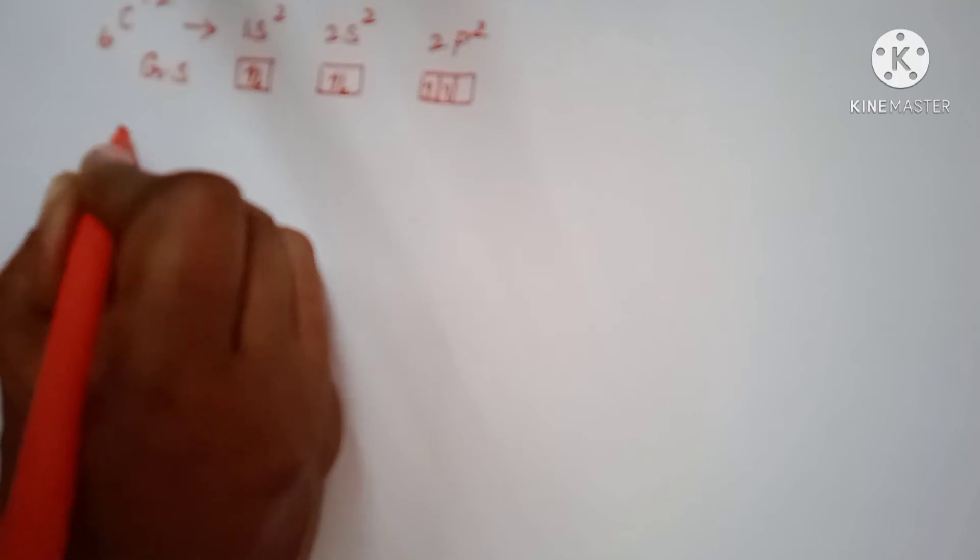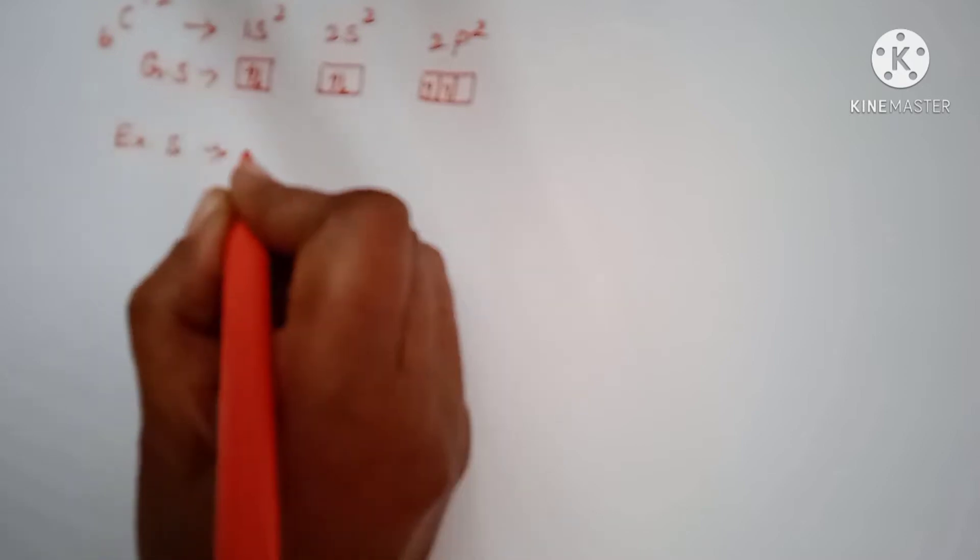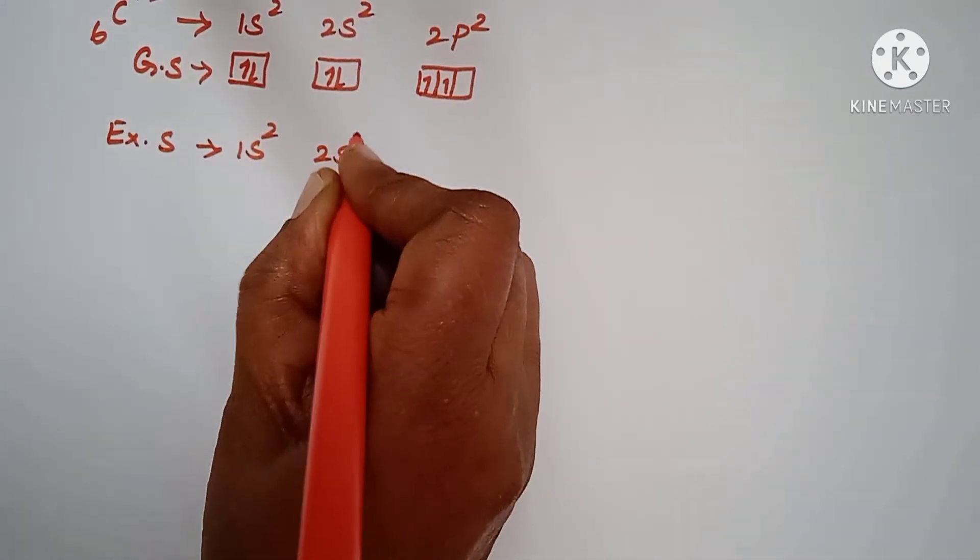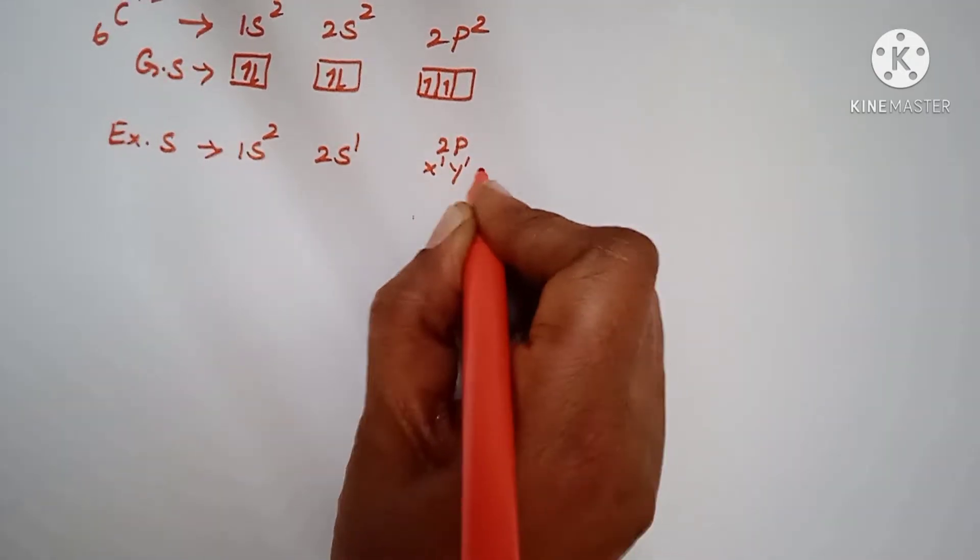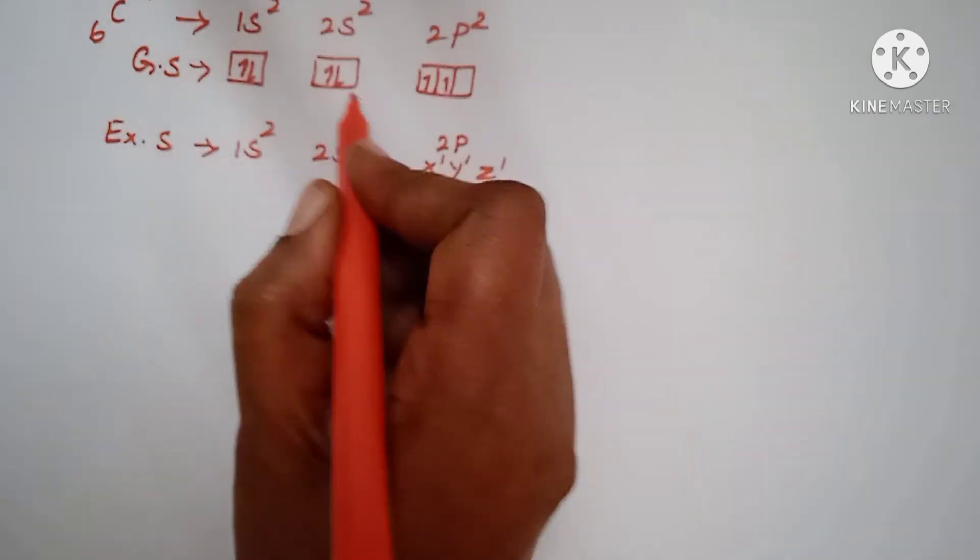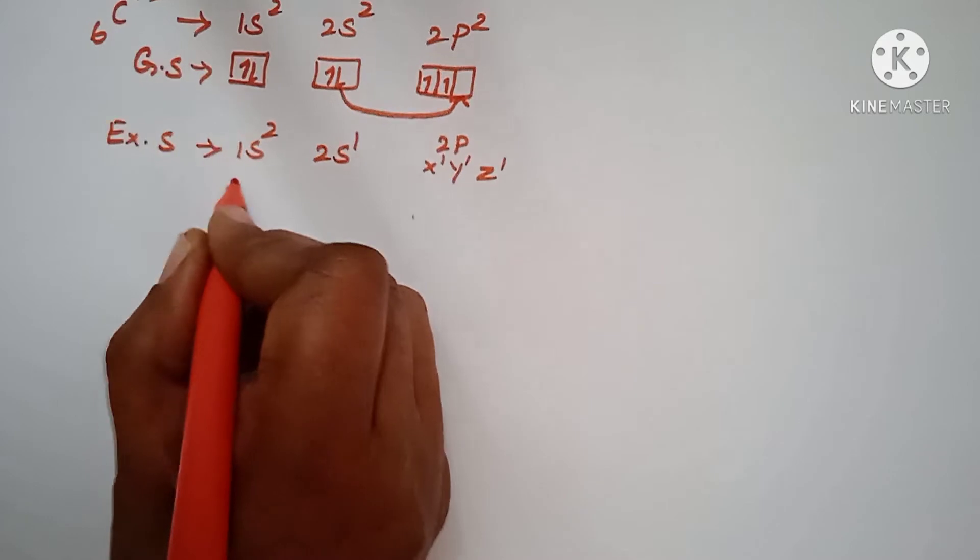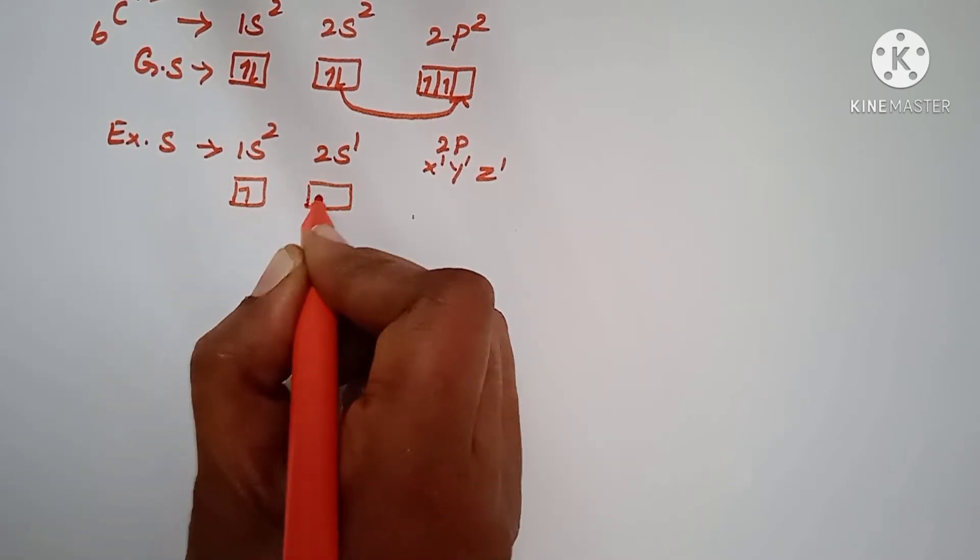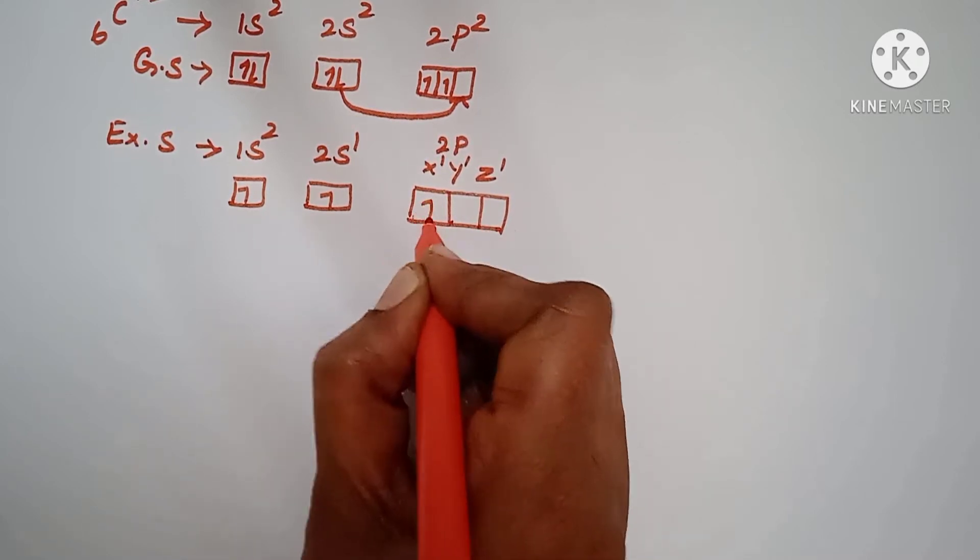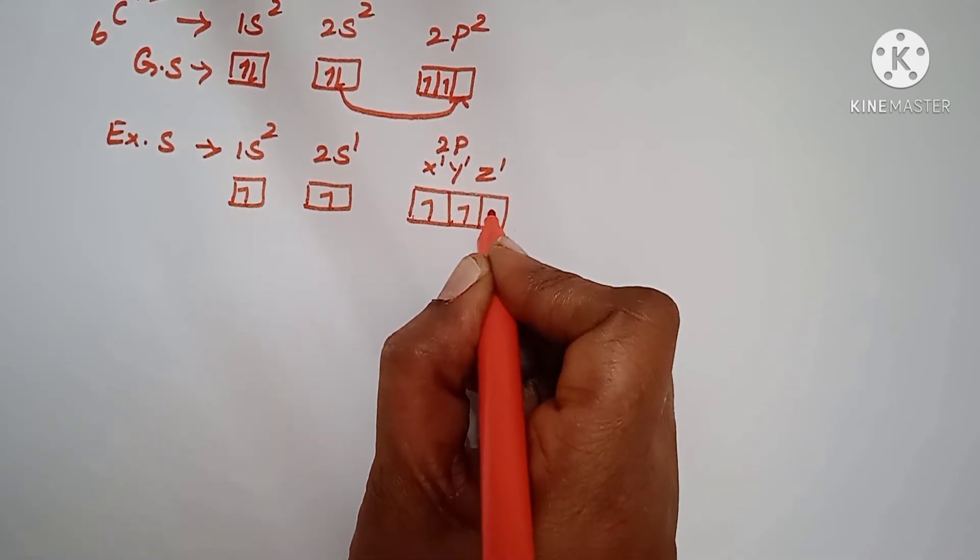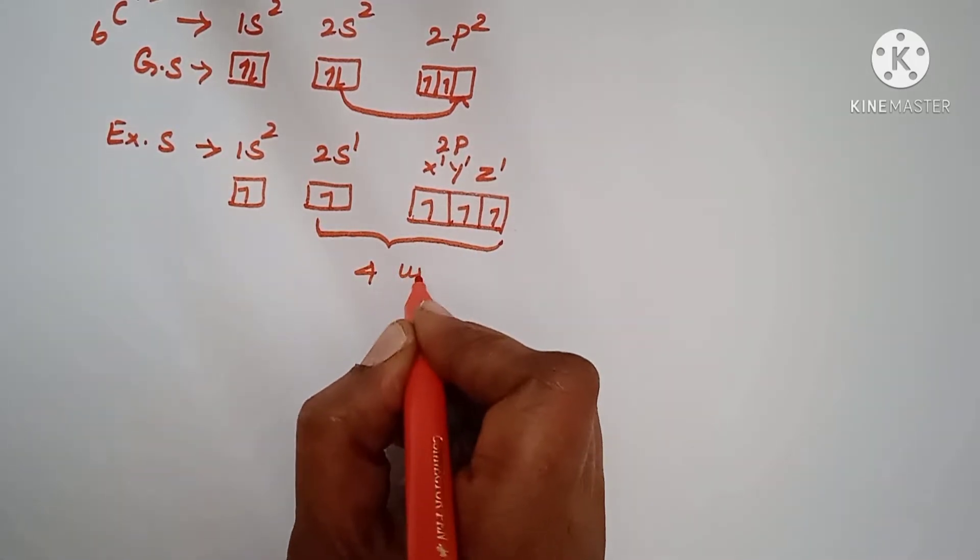Now when it goes to excited state, how it changes? 1s2, 2s1, 2p x1, y1 and z1. So z1 how it comes? It goes and fills when it goes to excited state. So this is the way we can identify. So how many unpaired electrons are there in the outermost orbital? 4 unpaired electrons.